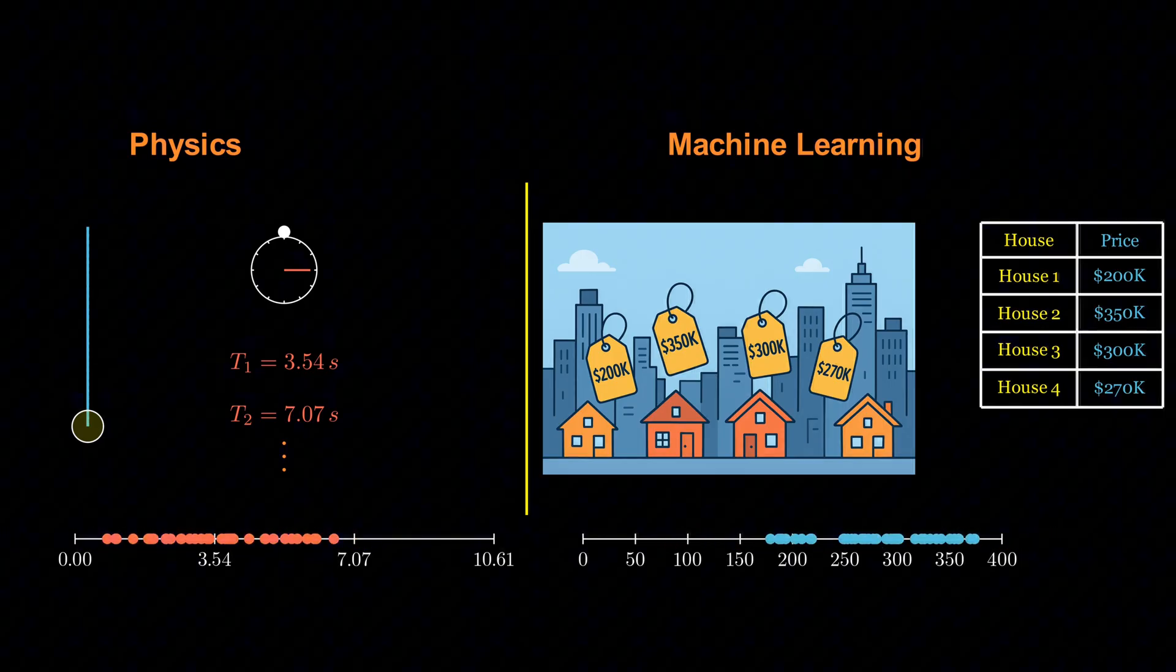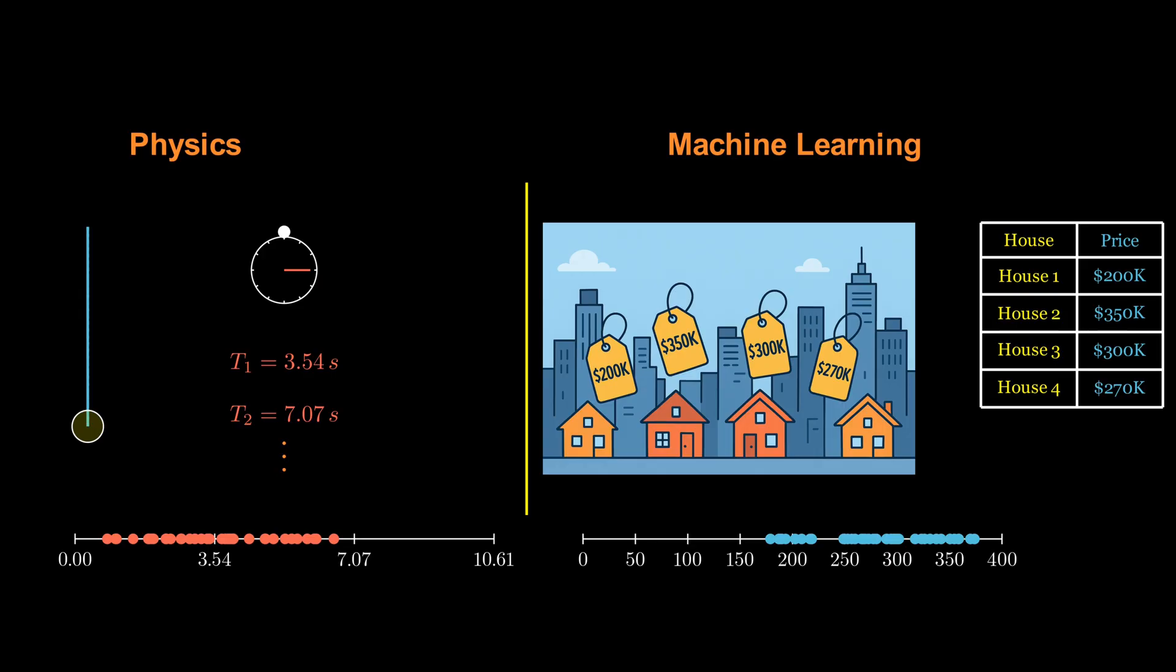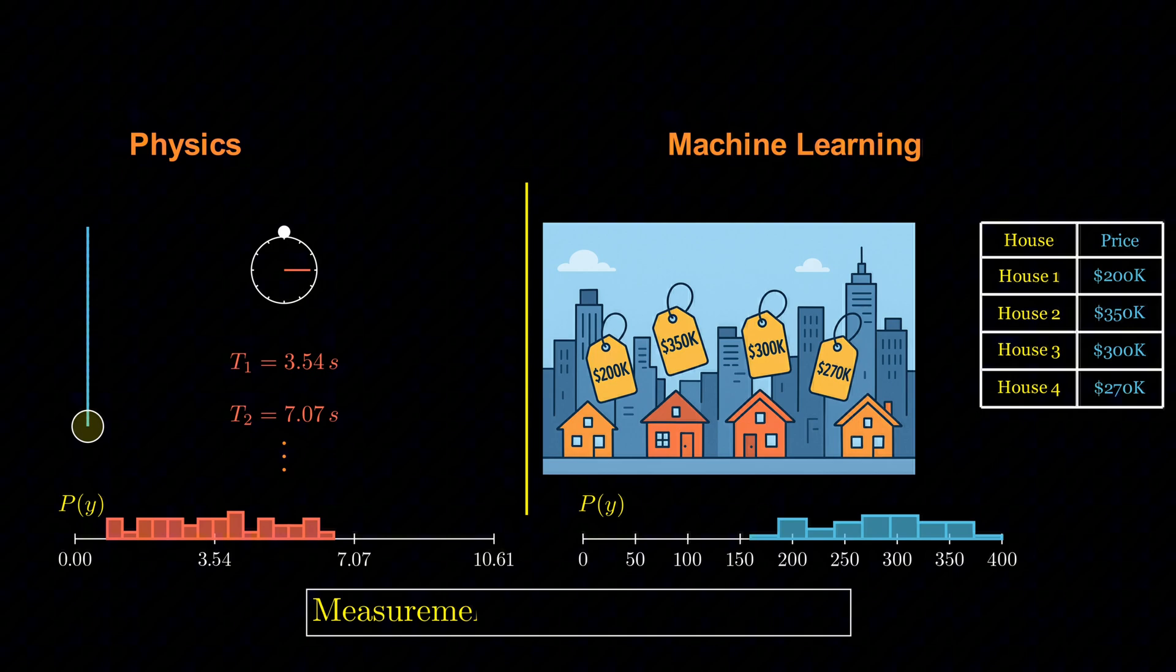This is where probability comes in. We can think of the period T or the house price as a random variable Y, drawn from some probability distribution P of Y.